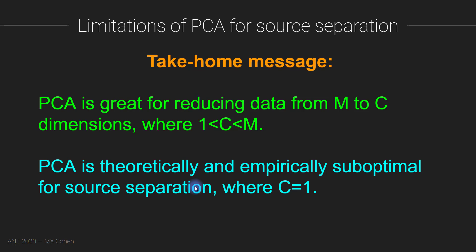The take-home is that PCA is a very powerful method for reducing data dimensionality from M channels to C components, where C is somewhere between one and M. But PCA is both theoretically and empirically suboptimal for source separation because of these three limitations: forced orthogonality, variance equals relevance, and an untenable null hypothesis.